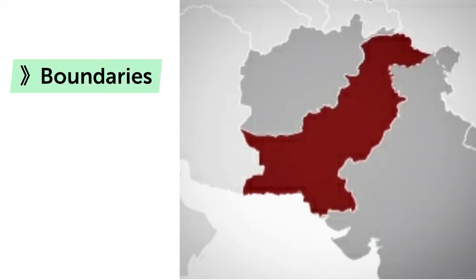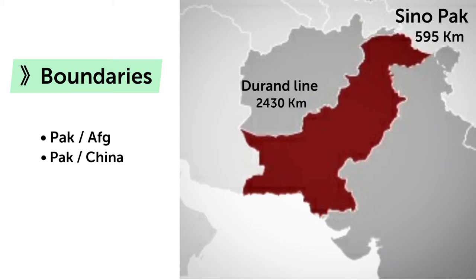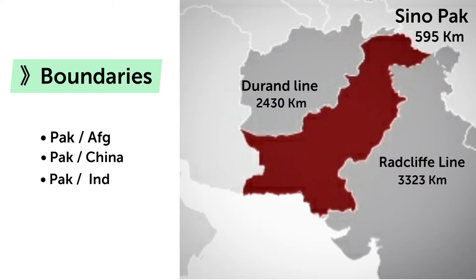The next point is boundaries of Pakistan. The border of Pakistan and Afghanistan is also called the Durand Line, and the length of this border is 2430 kilometers. The border of China and Pakistan is also called the Sino-Pak border, and the length of this border is 595 kilometers. The border of India and Pakistan is the largest border and is also called the Radcliffe Line, and the length of this border is 3323 kilometers.